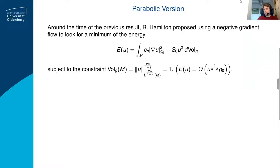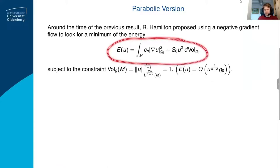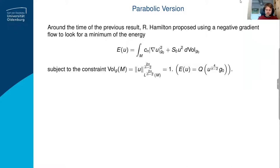In the late 80s, Richard Hamilton came up with another way of looking at the Yamabe problem — namely as a flow. Instead of solving the elliptic problem directly, you solve a parabolic problem. He introduced an energy, which is essentially the total scalar curvature of a conformally rescaled metric, with the constraint that you don't change the total volume. This normalization avoids silly solutions where you collapse the manifold to a point or expand it to infinity.